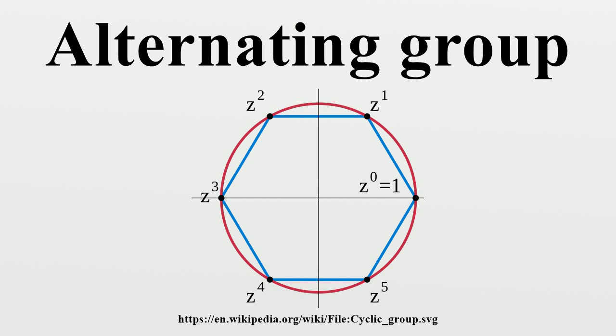A5 is the smallest non-abelian simple group, having order 60, and the smallest non-solvable group. The group A4 has a Klein four group V as a proper normal subgroup, namely the identity and the double transpositions, and maps to A3 ≅ C3.